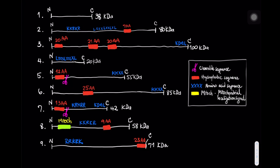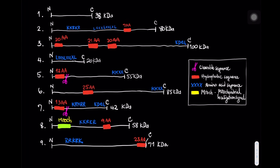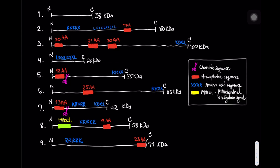Here we have nine different examples of different proteins, each one with peculiarities associated with their linear amino acid sequences. So the information provided indicates characteristics associated with the primary structure of these proteins — their amino acid sequences. Let's start addressing the potential cellular localization of all of these proteins.